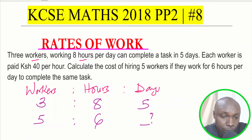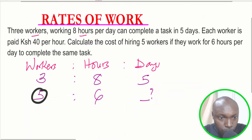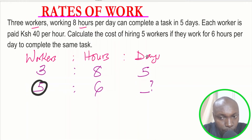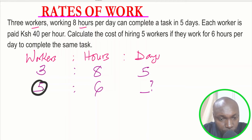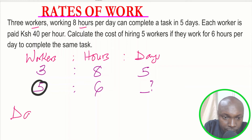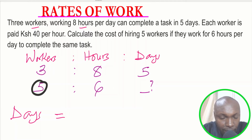The first thing we need to find is the number of days these five workers are going to take. We compare the workers with the number of days to find the ratio in which the days are increasing or decreasing. Three workers take five days — when the number of workers increases from three to five, the number of days taken to complete the task is going to reduce. So the days reduce by the ratio three to five.